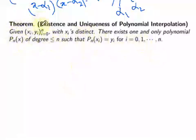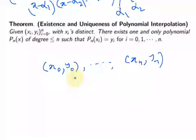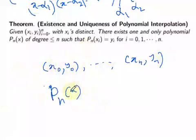The existence part is clear because we have already found polynomial interpolations. For a given data set, we found a polynomial which passes through that data set — a polynomial P_n(x) of degree less than or equal to n that passes through all these data points. That existence part we have already done.